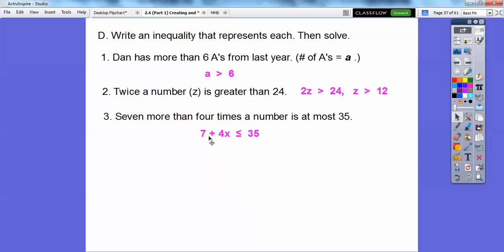So we're going to do, and now we're going to subtract off the 7 on both sides, and now we're going to divide both sides by 4, and we get X is less than or equal to 7. So it said up here, write any quality that represents that, it's 7 plus 4X less than or equal to 35, and then our solution is X is less than or equal to 7.